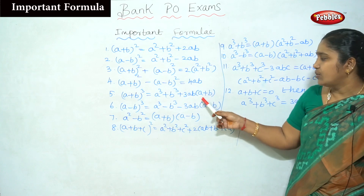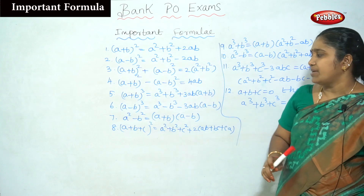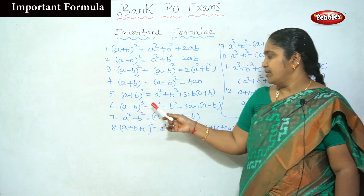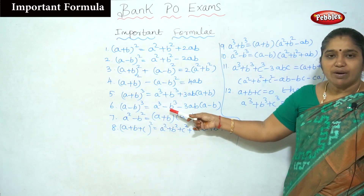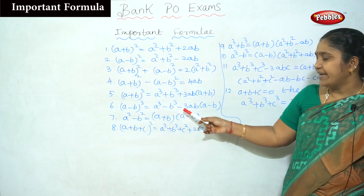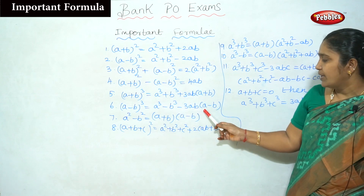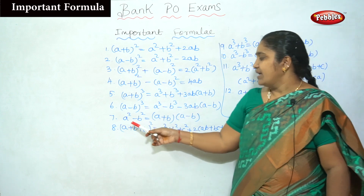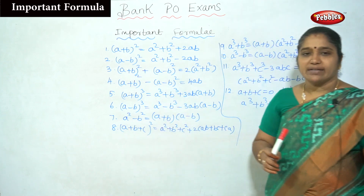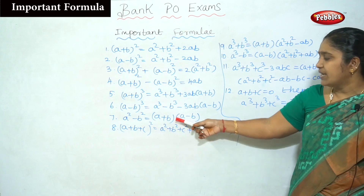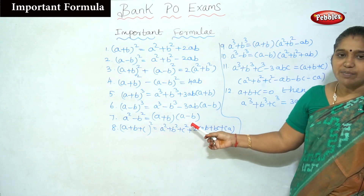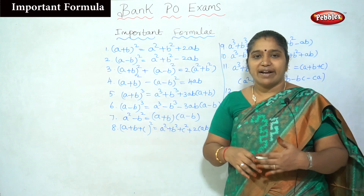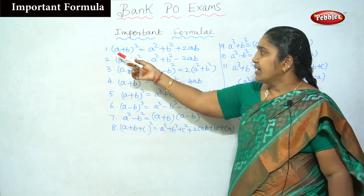Then (a + b) whole cube = a³ + b³ + 3ab(a + b). And (a - b) whole cube = a³ - b³ - 3ab(a - b). Also, a² - b² = (a + b)(a - b). We can use these formulas for numerical values as well.